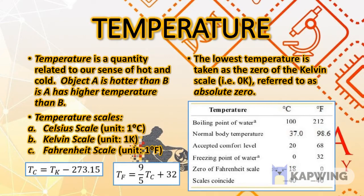First, we have temperature. Temperature is a quantity that is related to our sense of hot and cold. If we want to measure how hot an object is, we measure the temperature of the object. Hotness and coldness are relative concepts — we typically compare one object with the other. For instance, object A is hotter than object B, which means A has a higher temperature than B.